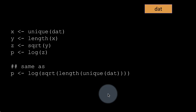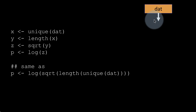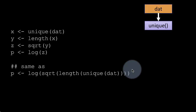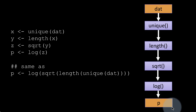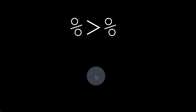What is really going on is we're taking dat, passing it to unique, passing the result to length, passing that result to sqrt, passing that result to log, and producing our final output. This is what I mean by things happening in a pipeline — you're throwing dat into one end of the pipeline, several operations are performed, and out comes the result. It's almost like a chemical processing plant, a petroleum refinery.